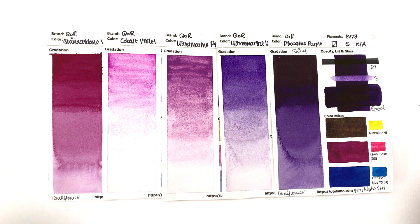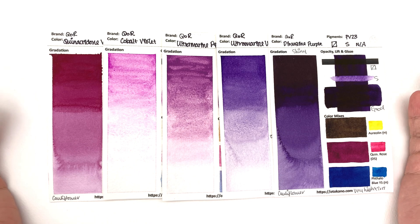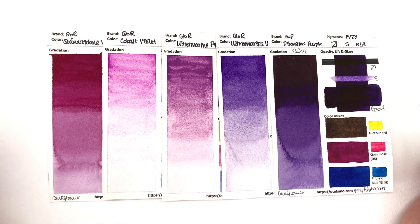Welcome back to the core swatching series in which I swatch all the colors of the core. This is episode 6 and we're going to be taking a look at the violets from the core range.